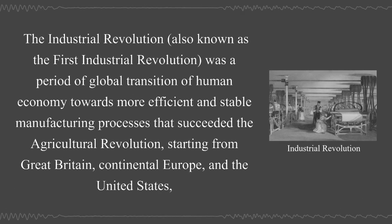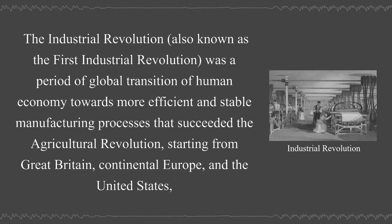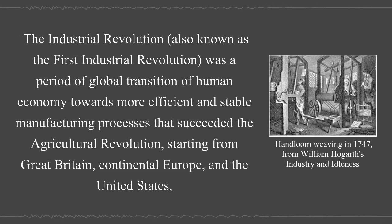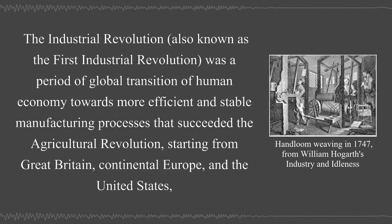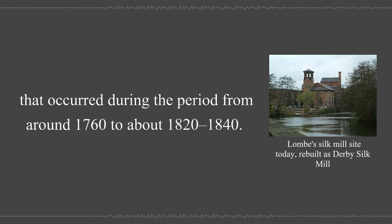The Industrial Revolution, also known as the First Industrial Revolution, was a period of global transition of human economy towards more efficient and stable manufacturing processes that succeeded the Agricultural Revolution, starting from Great Britain, Continental Europe, and the United States. That occurred during the period from around 1760 to about 1820–1840.